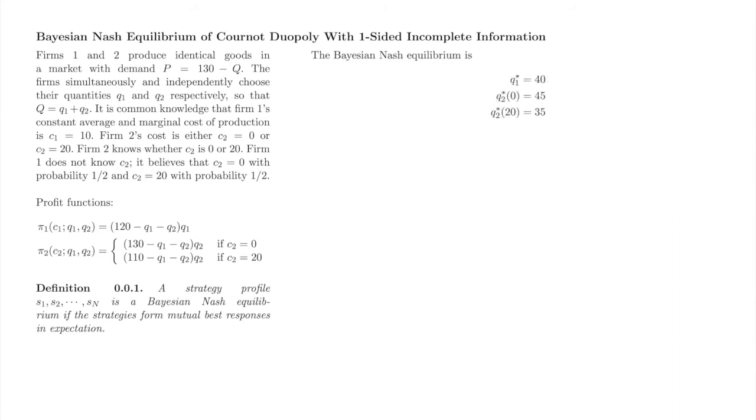At the end of the game, firm 1 observes the market price and its profit, and can go back and figure out whether firm 2's cost was 0 or 20. Firm 1 will experience regret in the sense that if firm 1 could replay Cournot duopoly knowing firm 2's cost, firm 1 could increase its profit by selecting a different quantity. This regret is an intrinsic part of Bayesian Nash equilibrium, and is another way of expressing the idea that in Bayesian Nash equilibrium, players mutually best respond in expectation only.